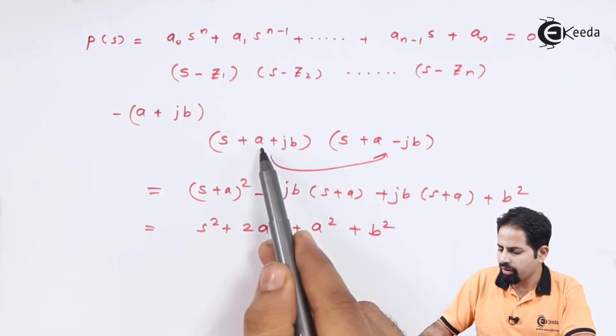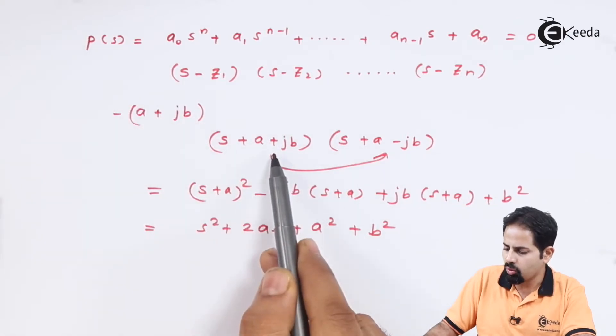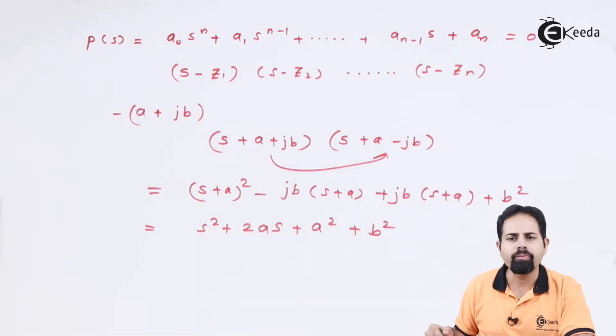So this occurs only if there is one zero, which we took P of S means it is a zero. And that was a complex term. So it has to be in pairs. So this satisfies the second condition.